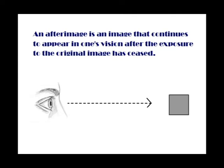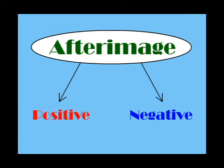An after image is an image that continues to appear in one's vision after the exposure to the original image has ceased. There are two types of after images: positive after image and negative after image.